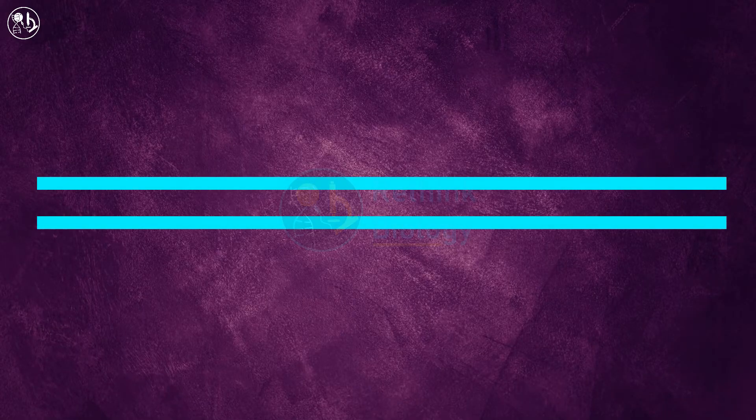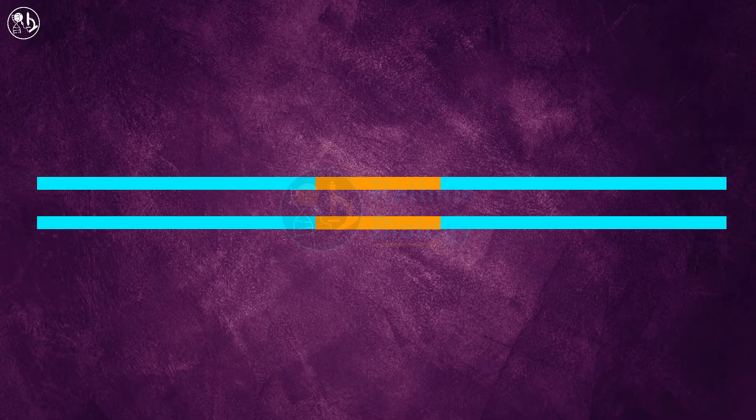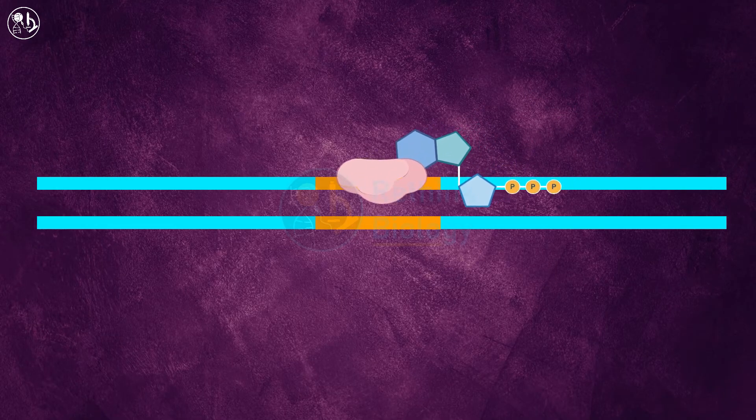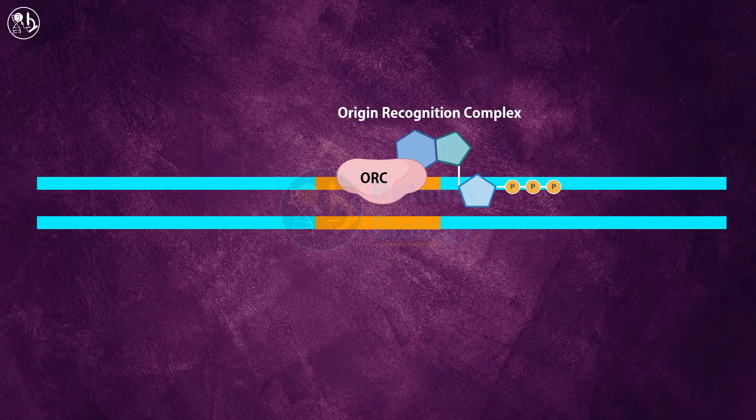Origin of replication in yeast is known as autonomously replicating sequence or ARS, which includes a consensus sequence, A domain, and additional elements. As cells enter the G1 phase of the cell cycle, the origin recognition complex or ORC bound to ATP comes and binds to the ARS region.